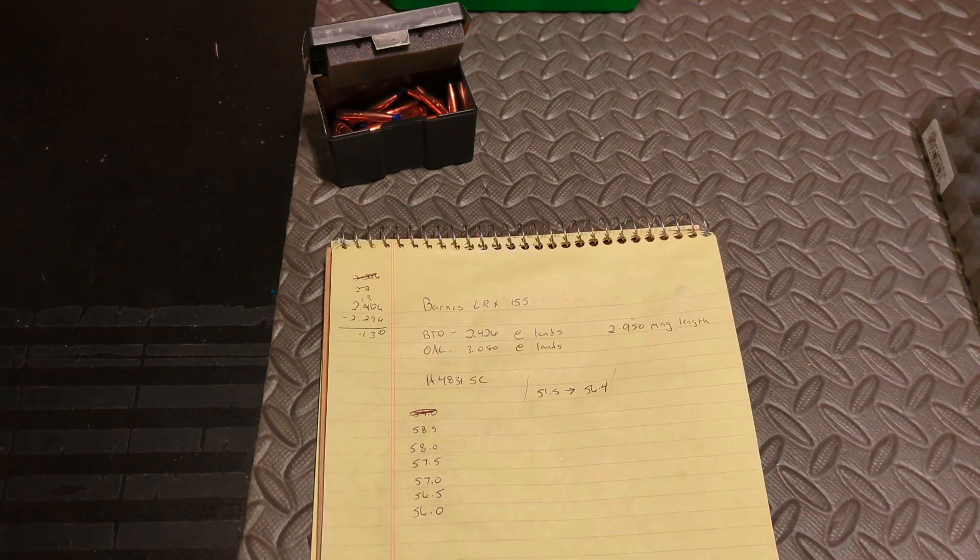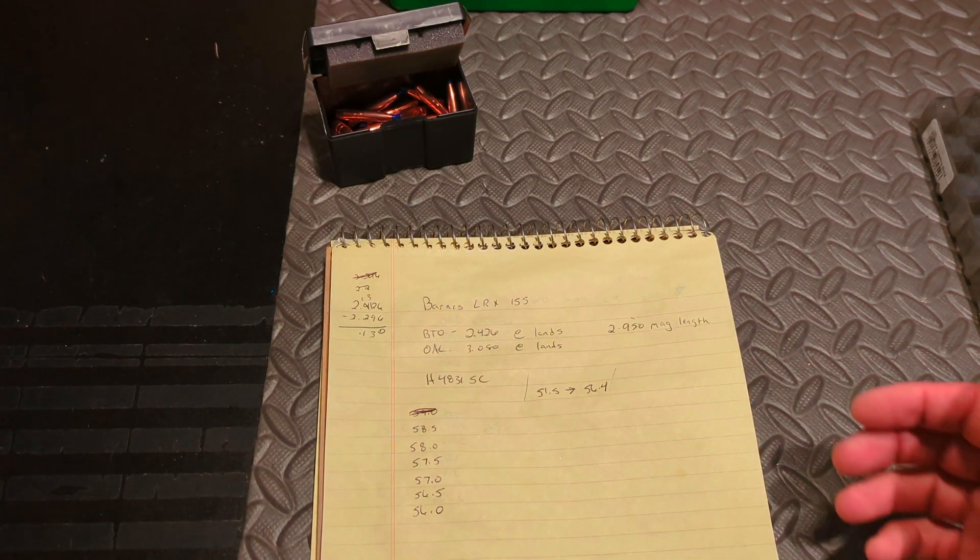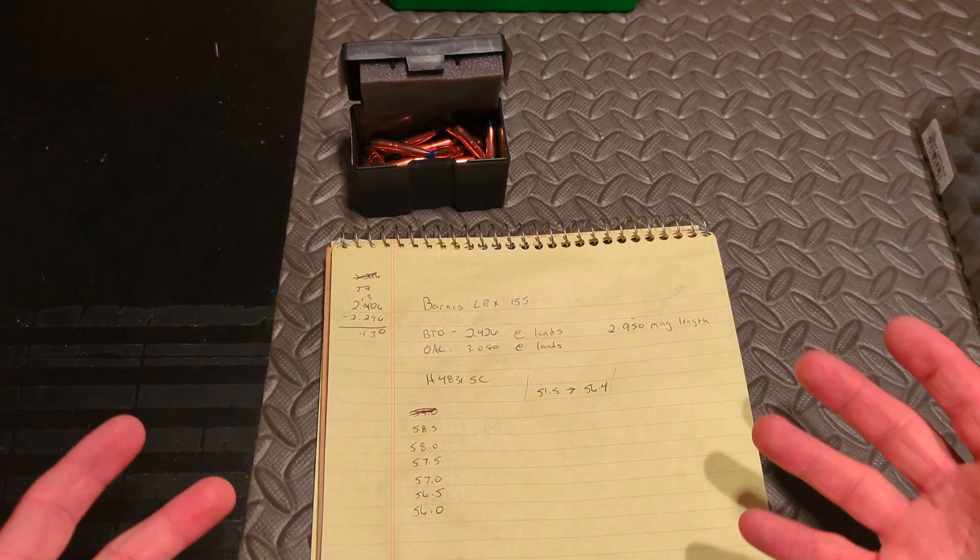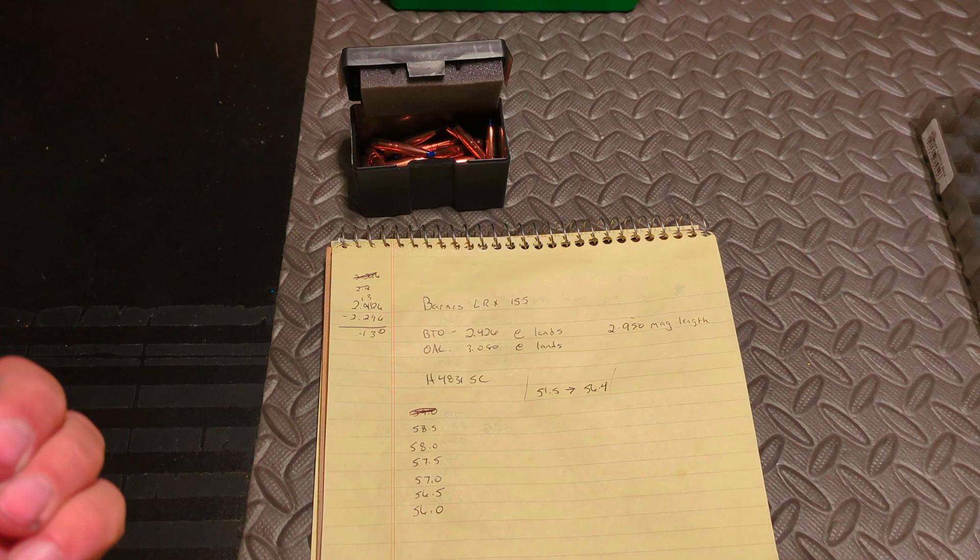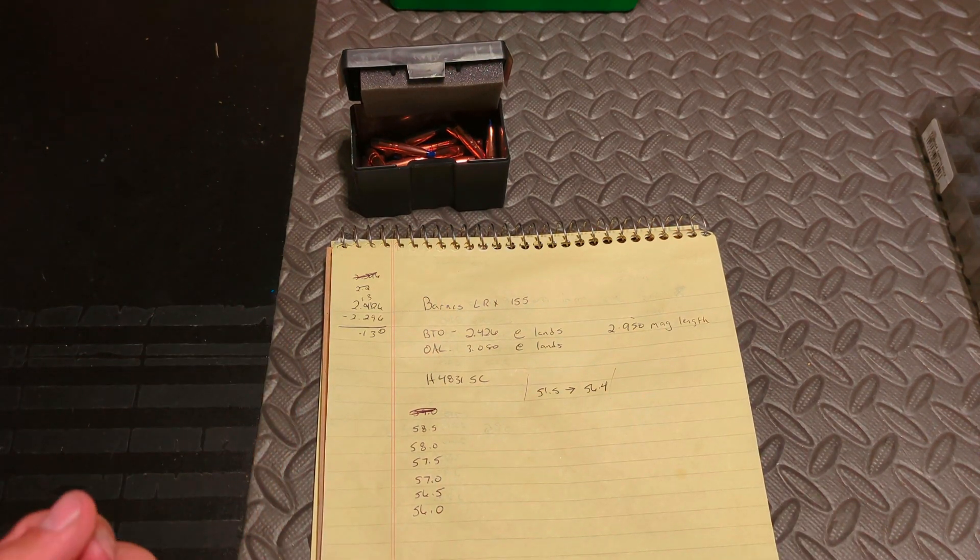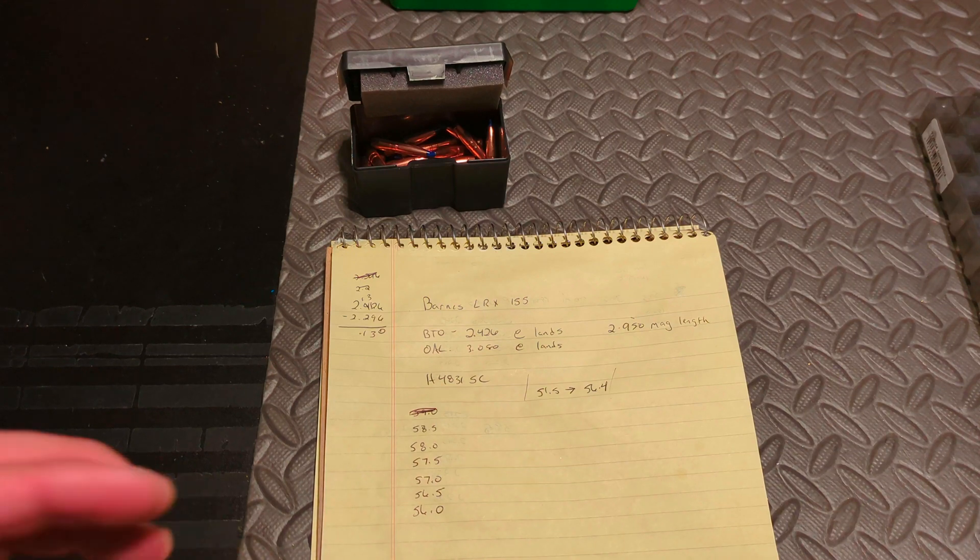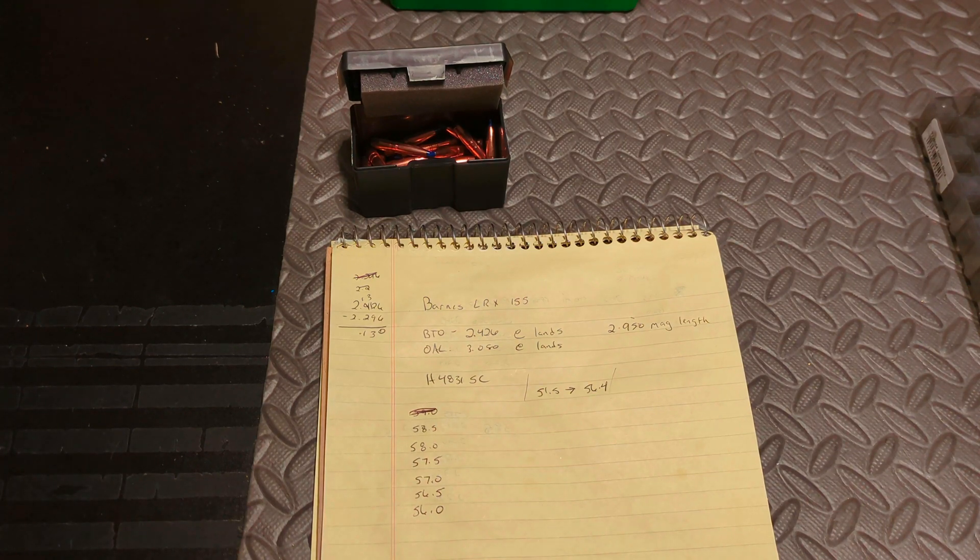I had to reshoot this portion of the video because my other video was corrupted. However, when starting with a brand new bullet, your first task is to figure out where that bullet's ogive meets with the lands of the rifling. There's several ways that you can do this. There's several videos that explain how to do it. I won't go into doing that. I did that off camera.